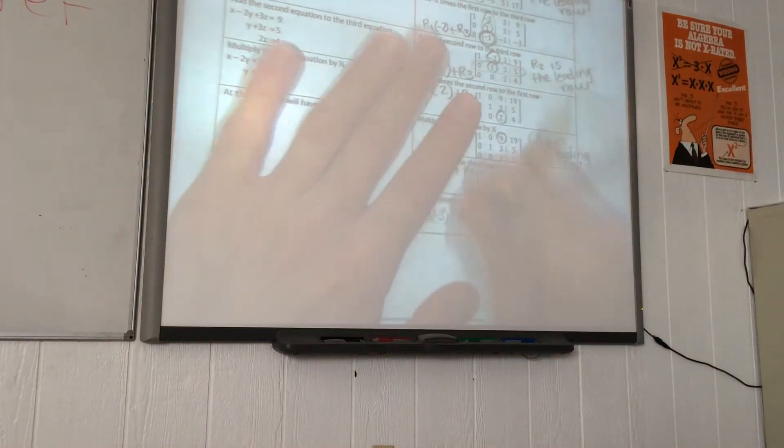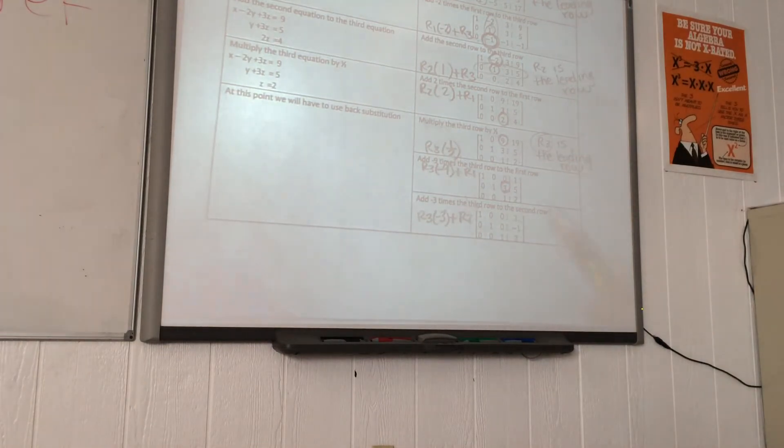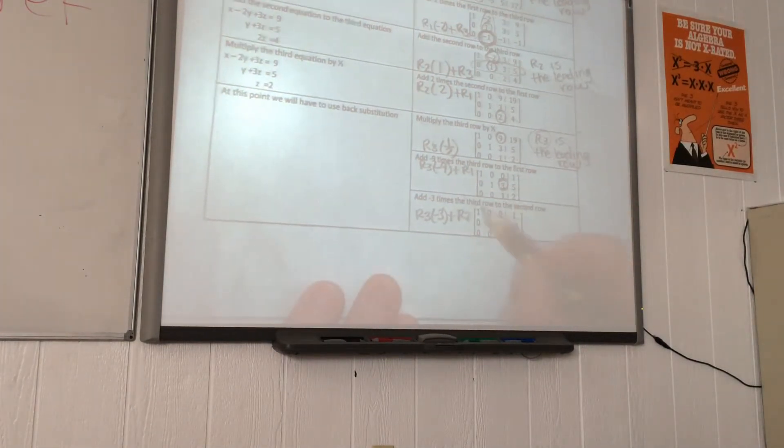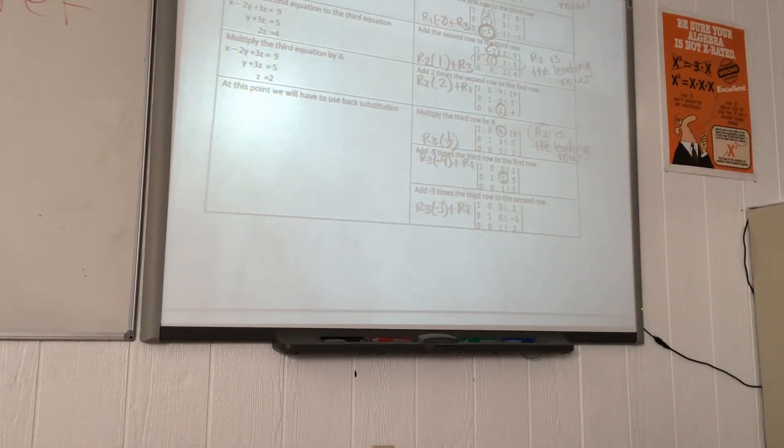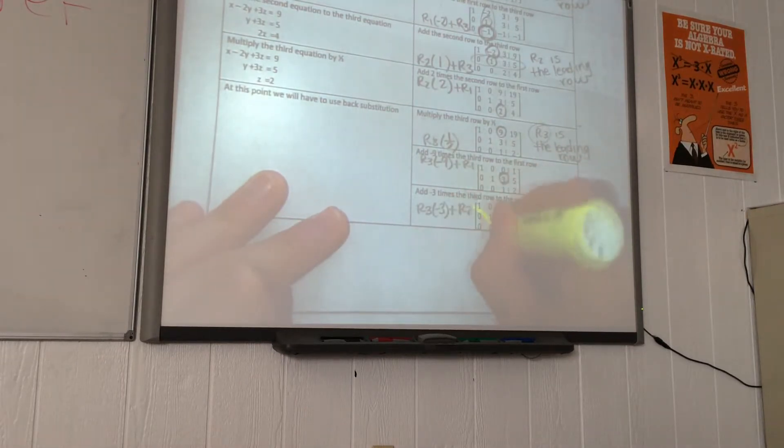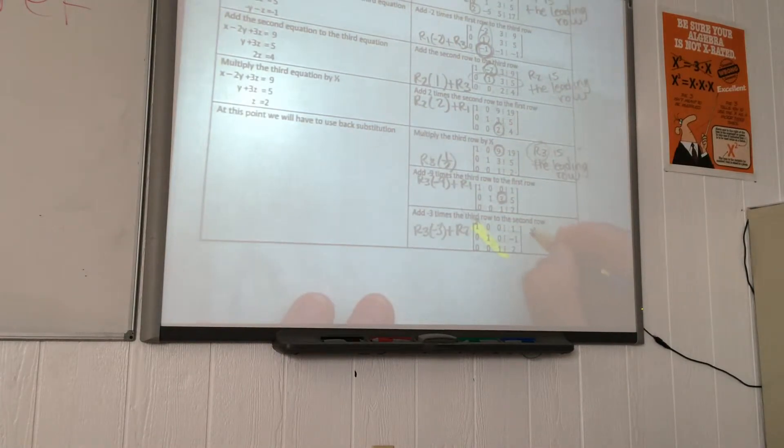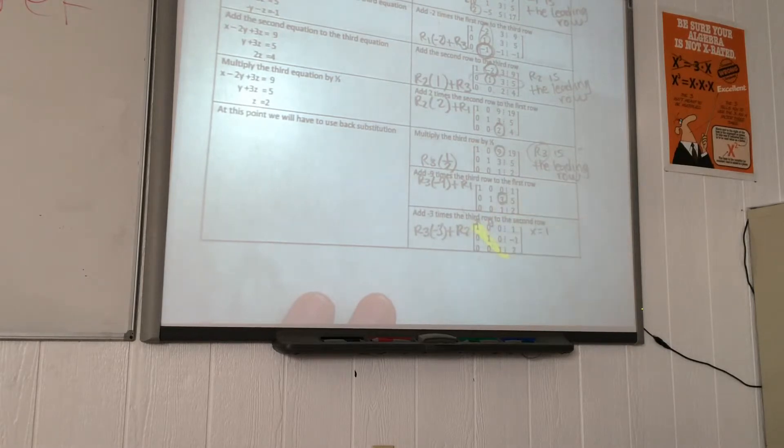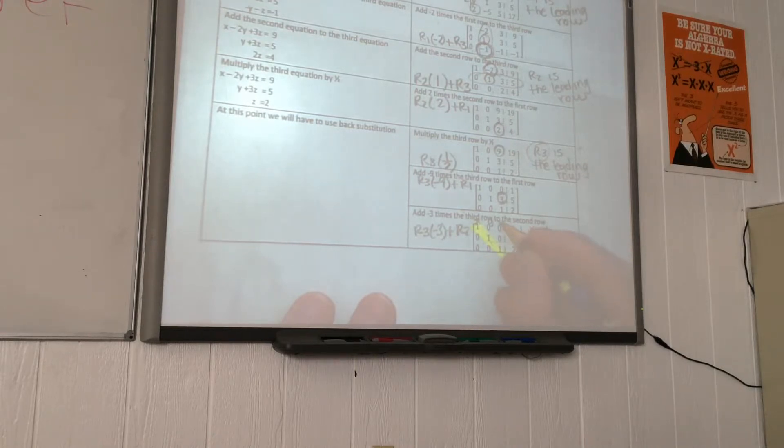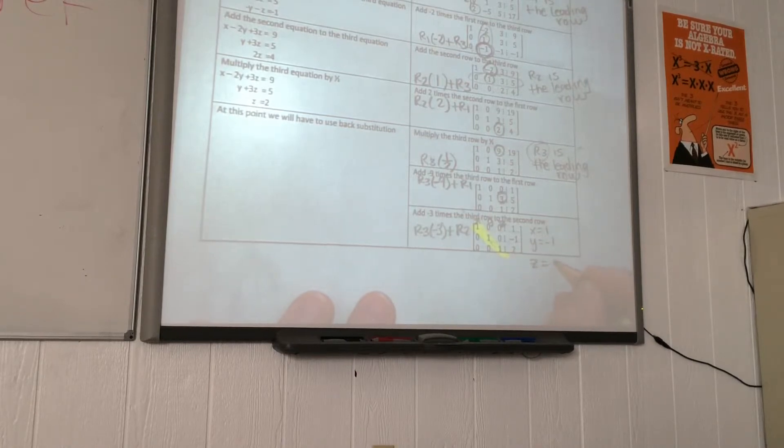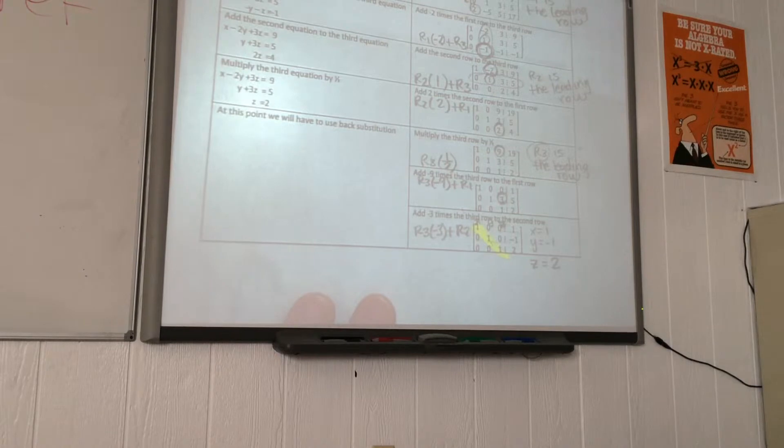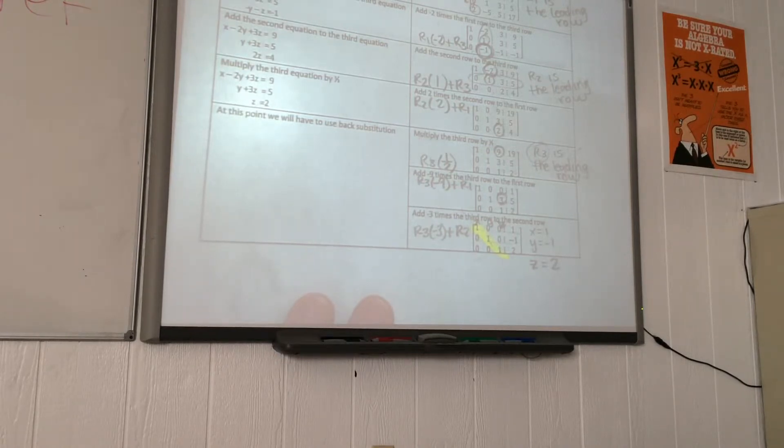At the end, once you have identity on all three across the left side of the augmented matrix, remember identity means you have 1s across the main diagonal. Once you have that, this is what it means. The first column represents x, so x equals 1. Second column represents y, so 1y equals negative 1. And the third column represents z, so 1z equals positive 2.